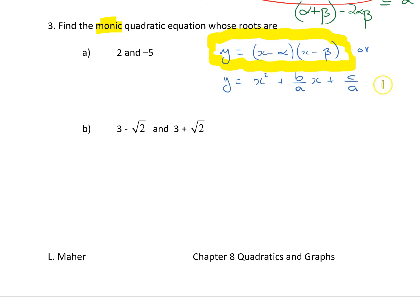So, multiplying through by a, we end up with something other than 1 as the coefficient of x squared. So, back to this question, find the monic quadratic equation, so monic, we could use this format.